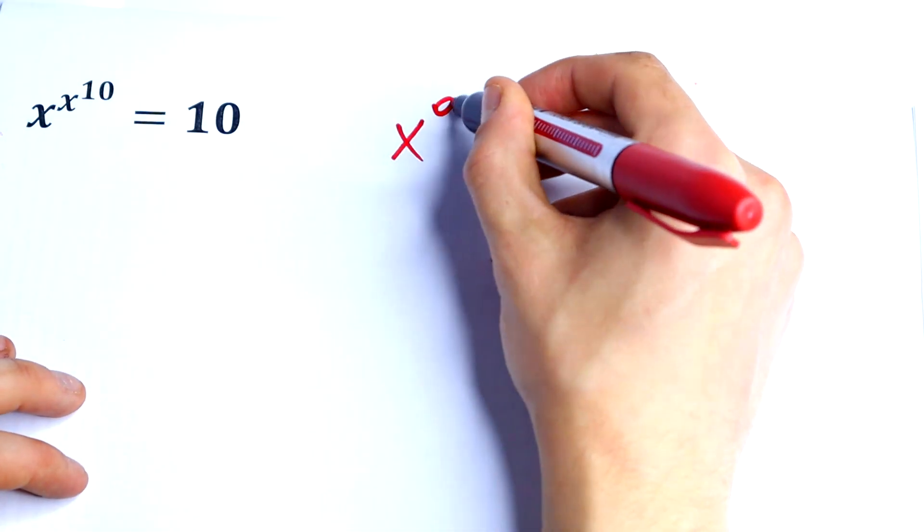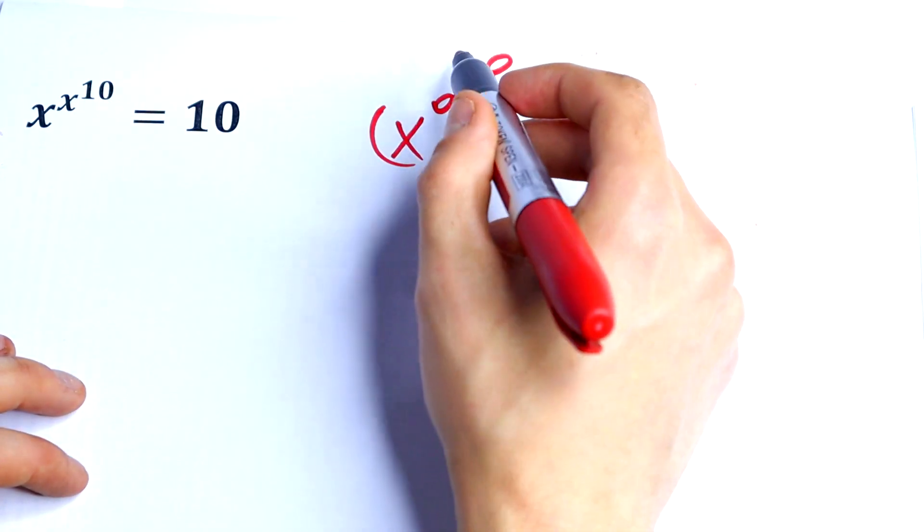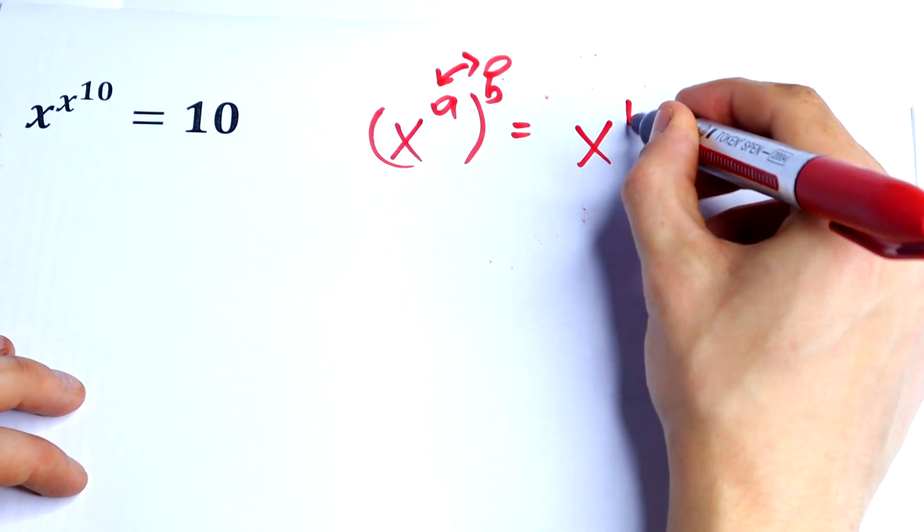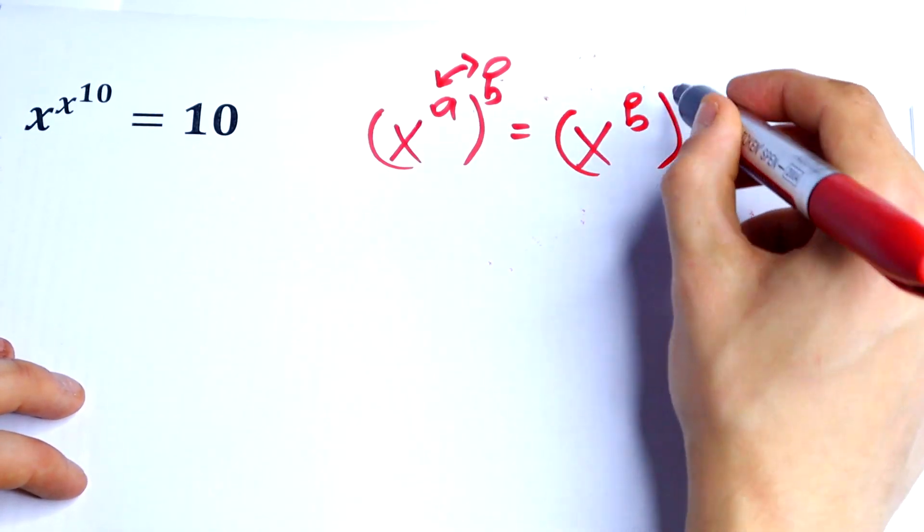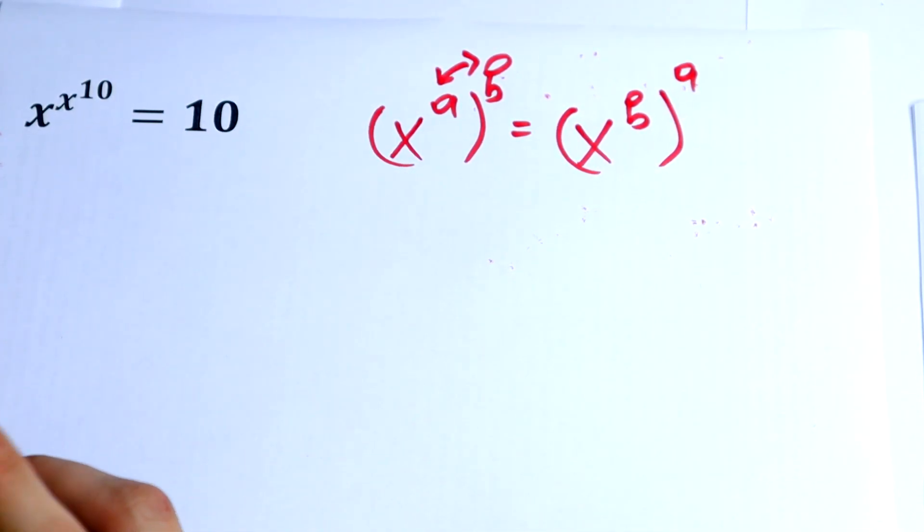If we have, for example, x to the power a raised to the power b, we can just swap our exponents. So it would be equal to x to the power b all raised to the power a. This is a really good property and we use this property right here.